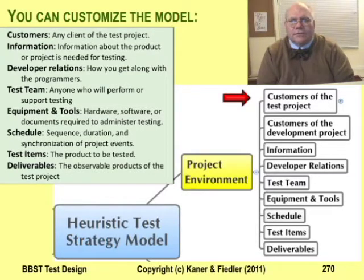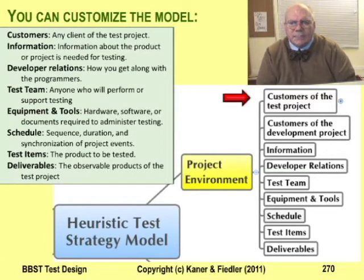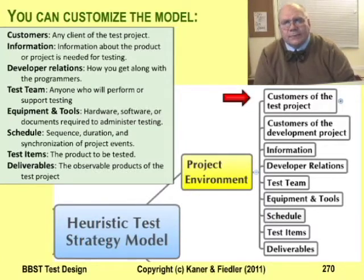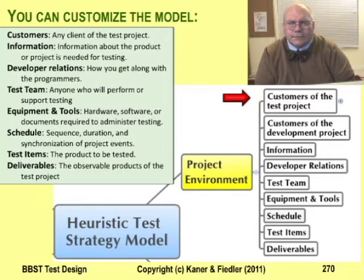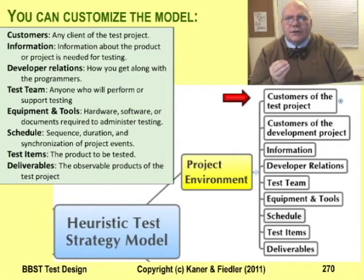You might have noticed that my map differs a little from James Bach's model. The original model considers only one type of customer. I show his list in the blue box, but I prefer to divide the customer group into two groups of stakeholders: the stakeholders of the overall project and the stakeholders of the testing subproject. Most of the time these are the same people with the same interests and expectations, but sometimes the groups differ. If there's a divergence, it's important for the test group to be aware of it and to manage it carefully. It's very common for people who use this model to customize it to their specific needs. For your assignment, you'll probably stick with the original model — it's a good idea to work with the original for a while before changing it.